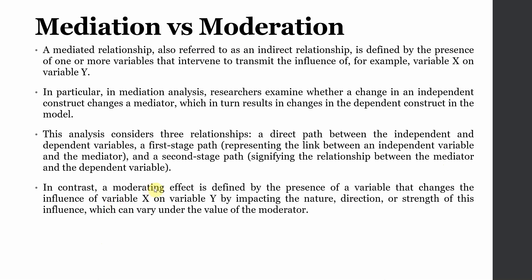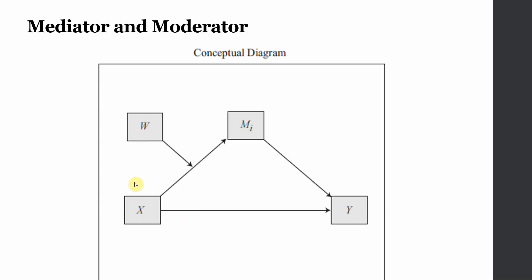In contrast, a moderating effect is defined by the presence of a variable that changes the influence of variable X on Y by impacting the nature, direction, or strength of the relationship. W is a moderator that could strengthen or weaken this particular relationship, or it may altogether change the relationship from positive to negative or negative to positive.